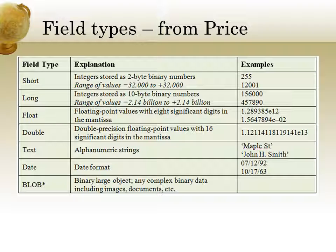This also comes back to field types. Pulling from the Mary Beth Price text as a quick reminder: short, long, float, double, text, date, blob — these are all different types of data that could be in a field. When you're trying to join or match from one thing to another, if it says 255 and you're thinking it's long but it's actually text, you might have some issues. You've got to be careful and understand the limitations of the different types of fields.